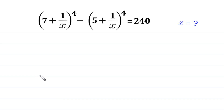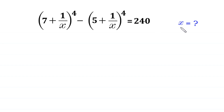Hello everyone. Welcome to Horus. We will solve this very nice algebra equation: (7 + 1/x)⁴ minus (5 + 1/x)⁴ is equal to 240. We need to find all possible values of x.